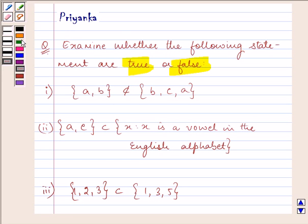Now the first statement given to us says that {a, b} is not a subset of {b, c, a}. Right.